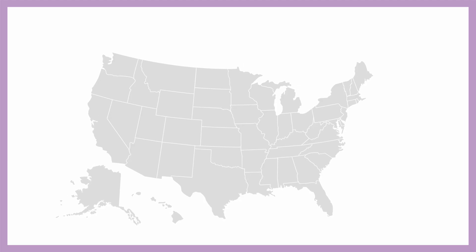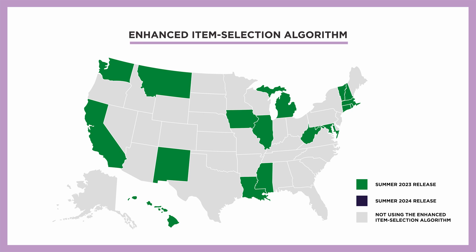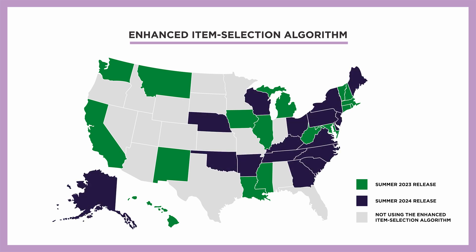We've talked about improvements to reports and innovative new research. Now let's talk about actions we're taking to improve the MAP Growth test itself. In the spring of 2023, we introduced a new type of test in 18 states that features an enhanced item selection algorithm. This coming summer, we're excited to extend this innovation to 16 more states, which means that over 60% of all students taking MAP Growth in the 2024-2025 school year will use this exciting new test.